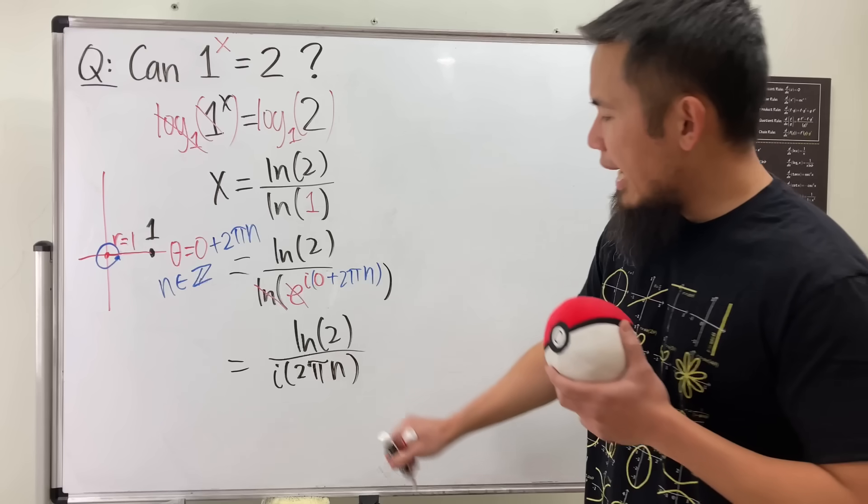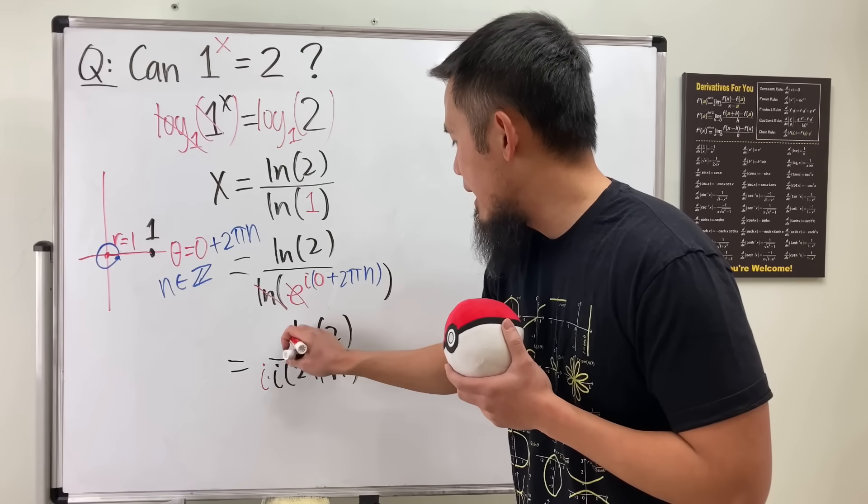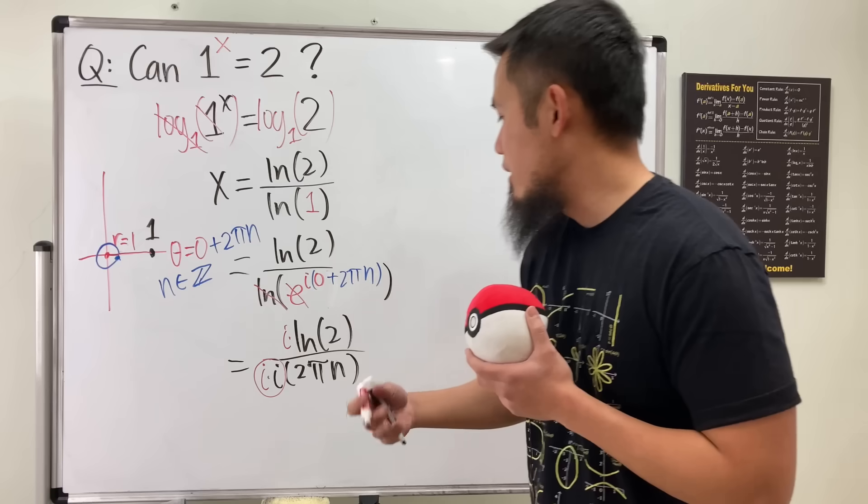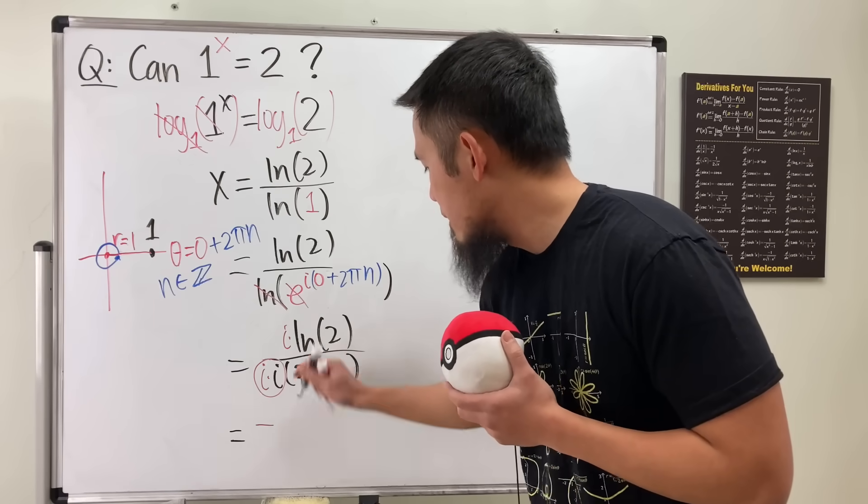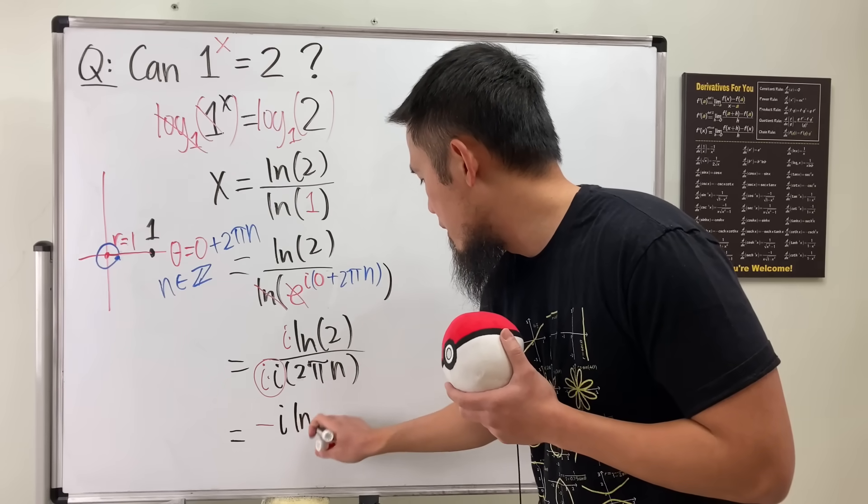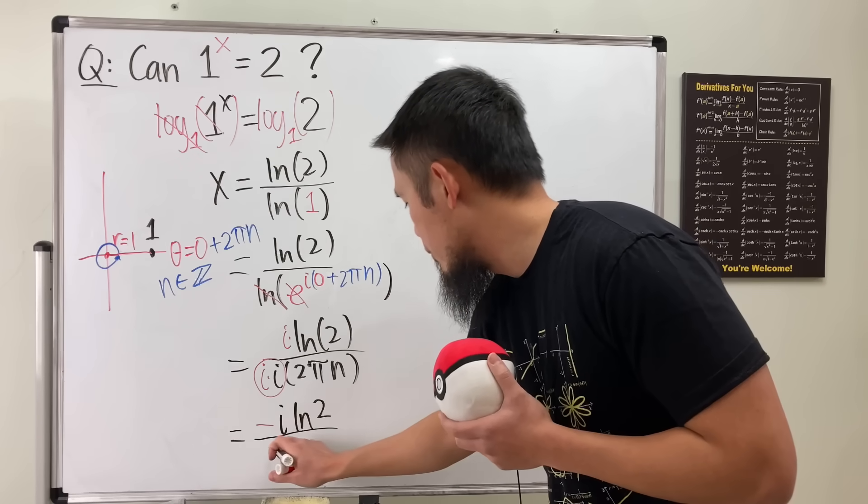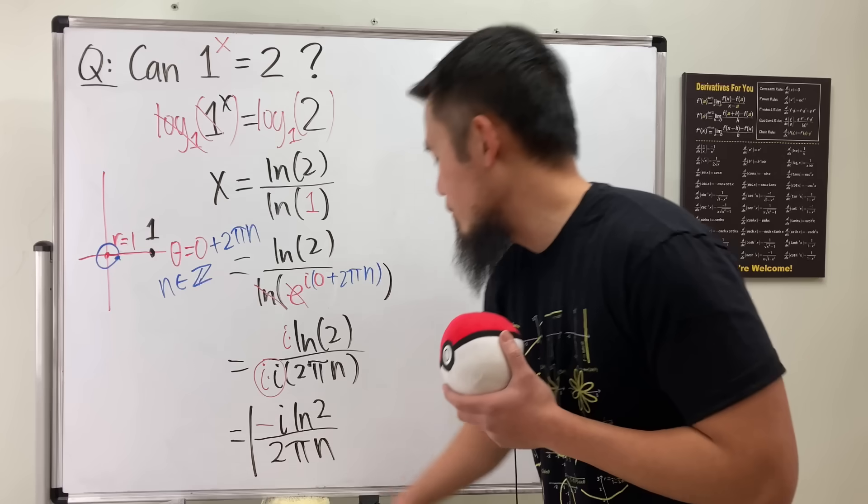But you know me, I don't like i to be on the bottom. I like it to be on the top. So let's multiply the bottom and the top by i, so that this right here will be negative 1. So all in all, I will write this as negative i·ln 2 over 2π·n, or 2n·π, depending on how you like it.